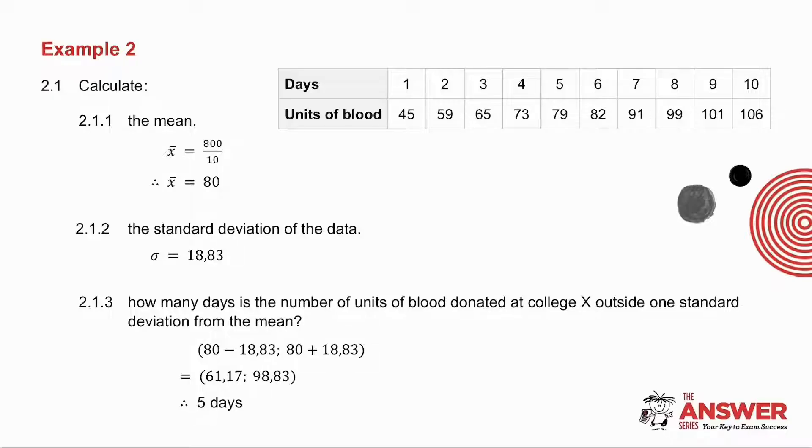They then ask you how many days is the number of units of blood donated at the college outside one standard deviation from the mean. So I take the mean minus the standard deviation. I take the mean plus the standard deviation. And then I have a look at my data. How many days are outside that? There are two below. There are three above. In other words, five days in total.